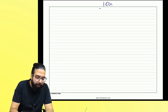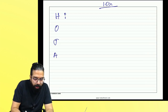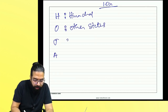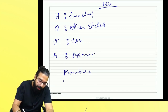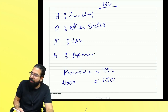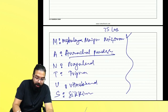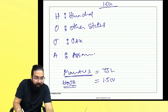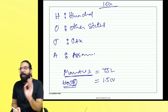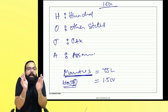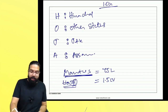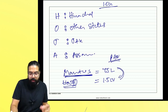The 1.5 crore limit is for HOJA: H for Himachal Pradesh; O for other states; J for Jammu and Kashmir; A for Assam. Remember: MANTUS names are long, so Arunachal Pradesh comes in MANTUS. Assam's name is short and HOJA is also short, so short comes with short — Assam comes in HOJA. If you have a single PAN and are present in both MANTUS and HOJA states, then the lower limit of 75 lakh will be applicable.